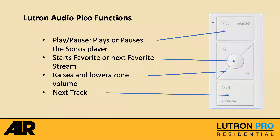Controlling the Sonos with the Audio Pico: the center button starts your favorites or cycles to the next favorite stream — going from your FM radio station to SiriusXM and so on. The top button plays and pauses — if something is playing it pauses the stream, and pressing it again resumes that same stream. The raise and lower buttons control volume, and the bottom button advances to the next track when playing a Spotify playlist or similar.